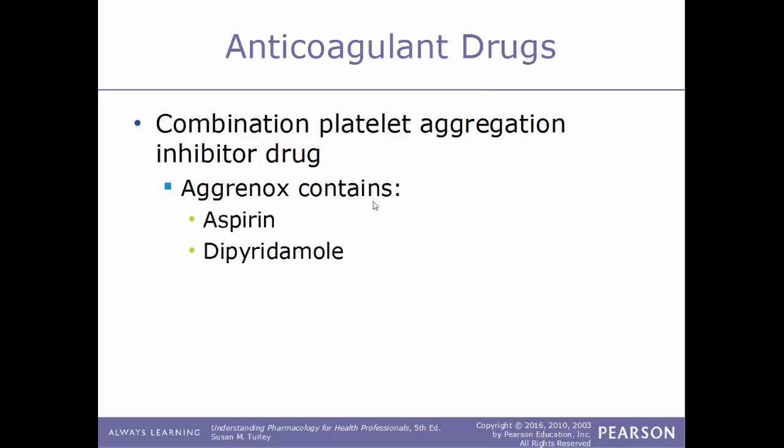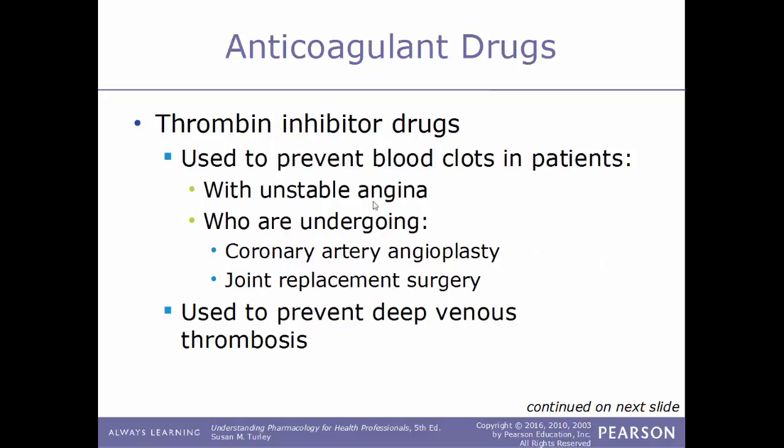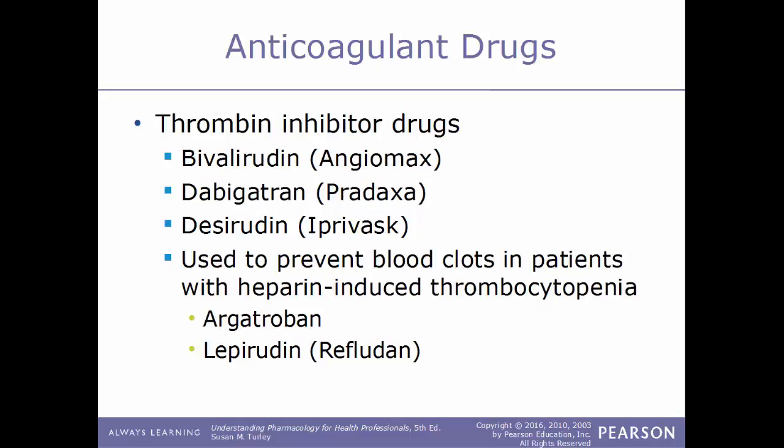It is common to see anticoagulant drugs sold as combination drugs. An example is Aggrenox, a combination of both aspirin and dipyridamole. Another type of anticoagulant drug is thrombin inhibitors. As the name implies, they inhibit the action of thrombin. These bind to receptor sites of both circulating thrombin in the blood and thrombin already incorporated into the blood clot. These are used to prevent blood clots in patients with unstable angina, those undergoing coronary artery angioplasty or joint replacement surgery, and can also help prevent deep venous thrombosis.